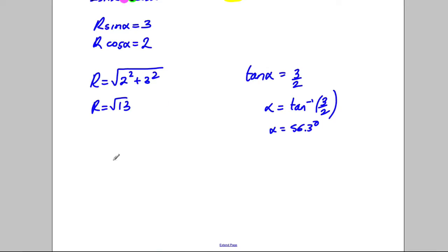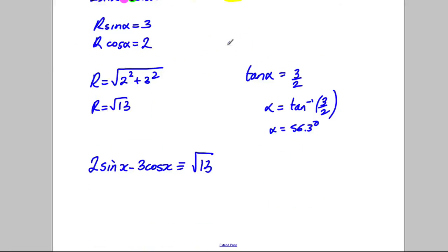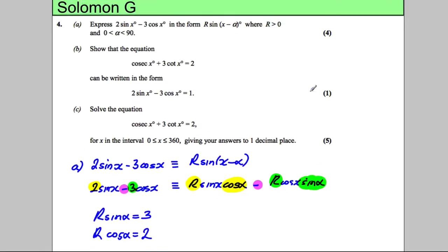Don't forget to state your final piece of work. So therefore we've worked out that 2 sine x minus 3 cosine x can be written in this form: the square root of 13 sine of x minus 56.3 degrees. Done. This one done for four marks.